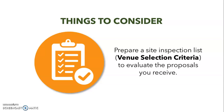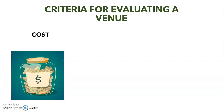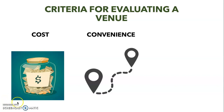Cost is a common factor in decision making. The venue selected must be within the budget of the organizer, and its payment terms must match the schedule and cash flow of the event. Convenience encompasses the availability on the target date, accessibility, proximity to other support services, suitability of space to the type of event, and its safety features. It is an important factor to consider when selecting the event venue.